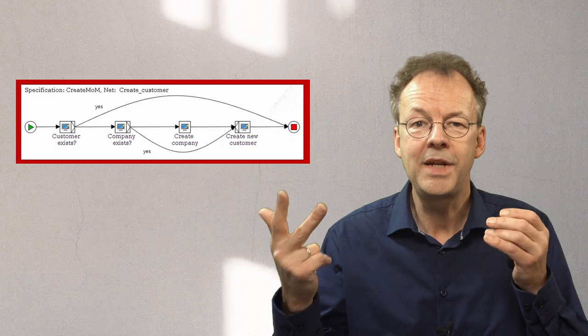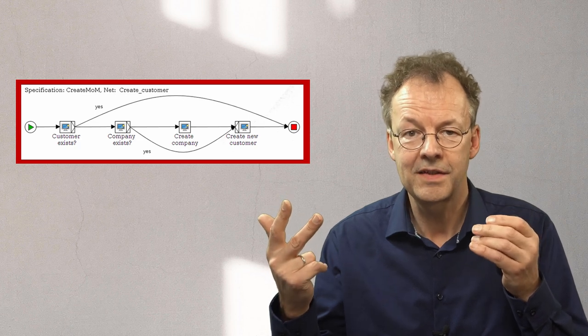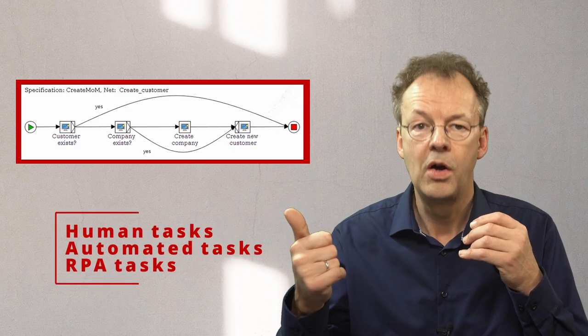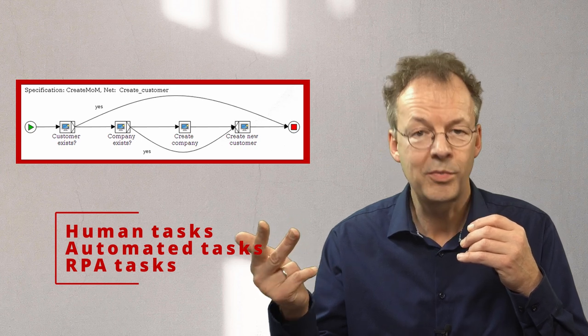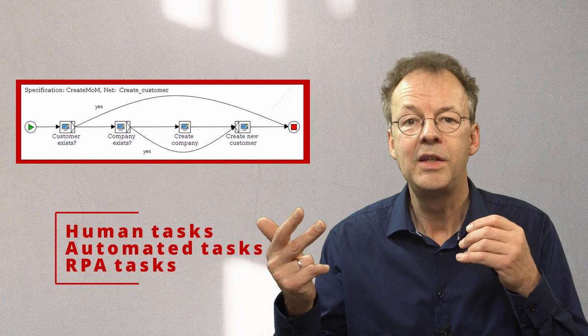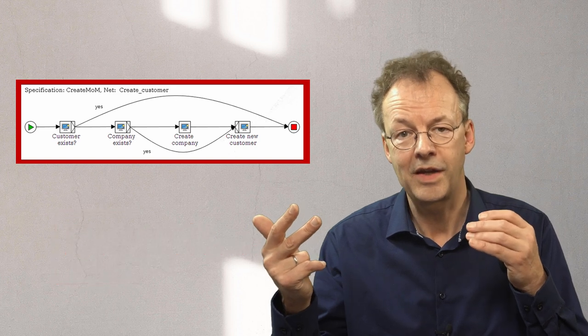In this example, we have three classes of tasks: human tasks, automated tasks using APIs, and robotic process automation tasks using the user interface of other applications.